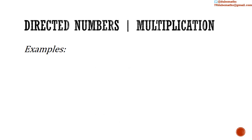Some examples. Positive 2 multiplied by positive 4: 2 multiplied by 4 is equal to 8. A positive multiplied by a positive is equal to a positive, so positive 8 is the answer.